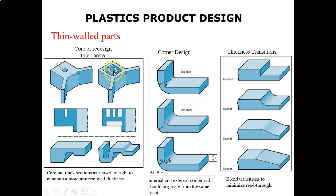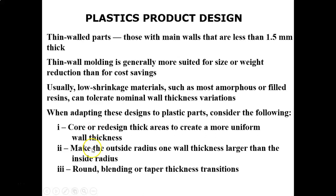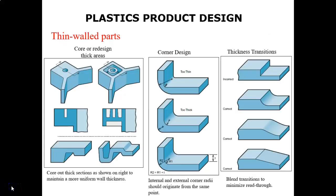We make a core or redesign the thick area to create a more uniform wall thickness, as shown in the figure. The second consideration is to make the outside radius one wall thickness larger than the inside radius, in order to maintain constant wall thickness through corners. The internal and external corners should originate from the same point. In incorrect designs, the corner is either too thin or too thick; in the correct design, both radii originate from the same point.